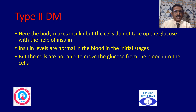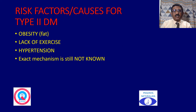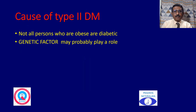In type 2 diabetes mellitus, the body makes insulin but the cells do not take up glucose with the help of insulin. Insulin levels are normal in the blood in the initial stages, but the cells are not able to move glucose from the blood into the cells. The most common risk factors are obesity, lack of exercise, and hypertension. However, not all obese persons have diabetes, so genetic factors may probably play an important role in type 2 diabetes mellitus.